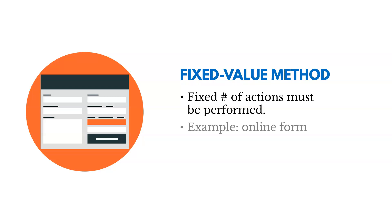Then there's the fixed value method, which ensures a fixed number of actions are performed. An online order form is an example — it requires you to fill out all of your information, including a proper address. It doesn't allow you to move forward until you do, because companies don't want orders to happen when key data is missing.